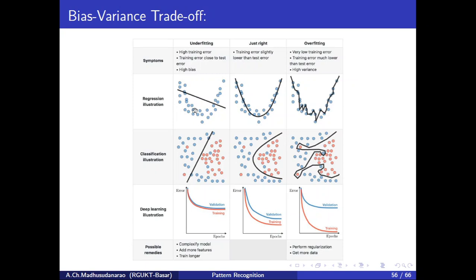If you look into this regression problem, this row corresponds to regression and this is the training data we are having. The blue colored dots correspond to training data and this is our model. Our model here is a linear model. We want to represent this data with the help of a linear model. The y-coordinate corresponds to y and x-coordinate corresponds to x. Our model is y equals to w1x plus w-naught.